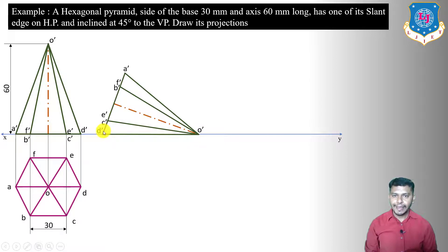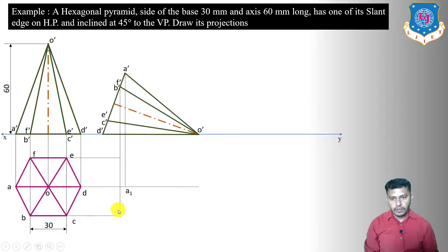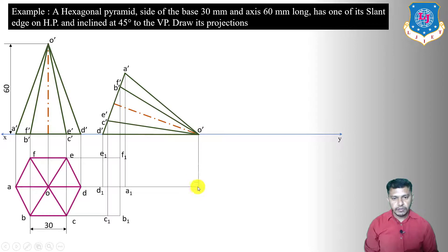To draw the top view in the second stage, draw loci from the first-stage top view: locus of F/E, locus of A/D, apex O, and locus of B/C. Draw projectors from A', B', F', E', C', D', and O'. At intersections we get A1, B1/F1, C1/E1, D1, and at the apex projector we get O1.